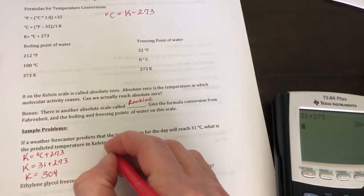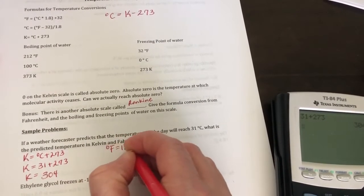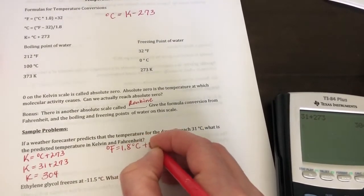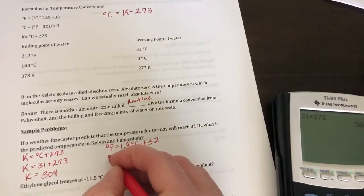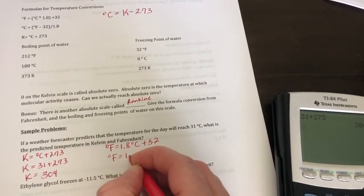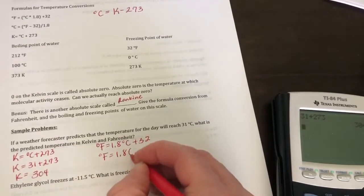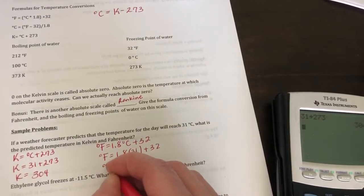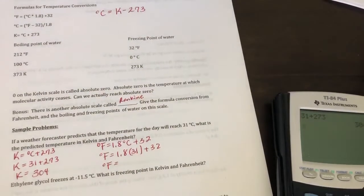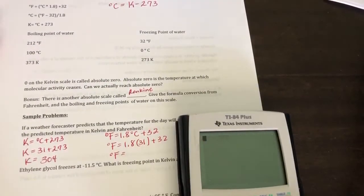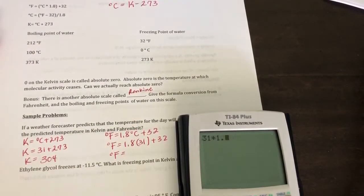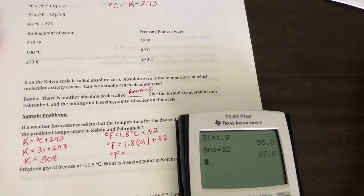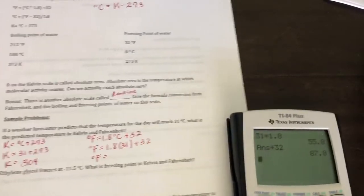Okay, Fahrenheit. Degrees Fahrenheit is equal to 1.8 degrees Celsius plus 32. Okay, so degrees Fahrenheit is equal to 1.8 times 31 plus 32. Now, order of operations says you have to do the multiplication first. So let's do the multiplication first.